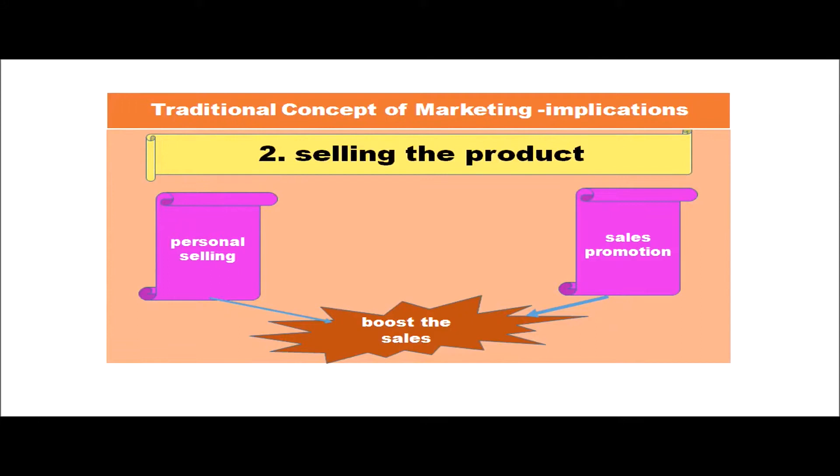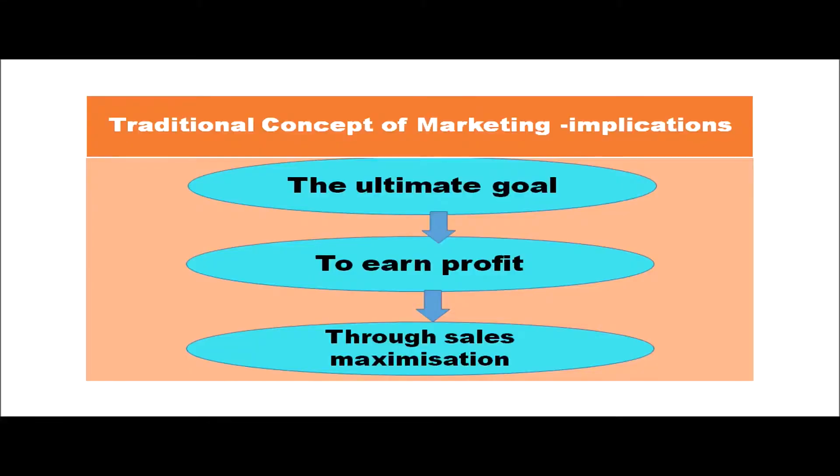Selling the product happens through personal selling and sales promotion activities. Personal selling means sending people door to door, having personal interaction to help consumers understand new features of the products and clarify queries. Sales promotion activities include discount, rebate, scratch card, coupons, and product combination. Using all these things we boost sales. The ultimate goal in the traditional concept is to earn profit through sales maximization — the focus is on maximizing sales.